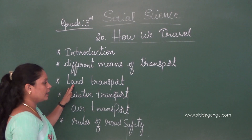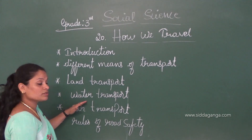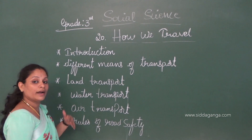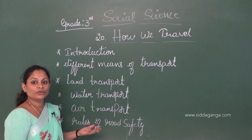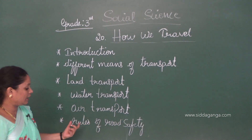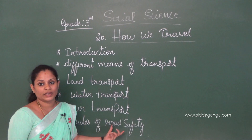The three major means of transport are: land transport, water transport, and air transport. And we will also learn the rules of road safety.